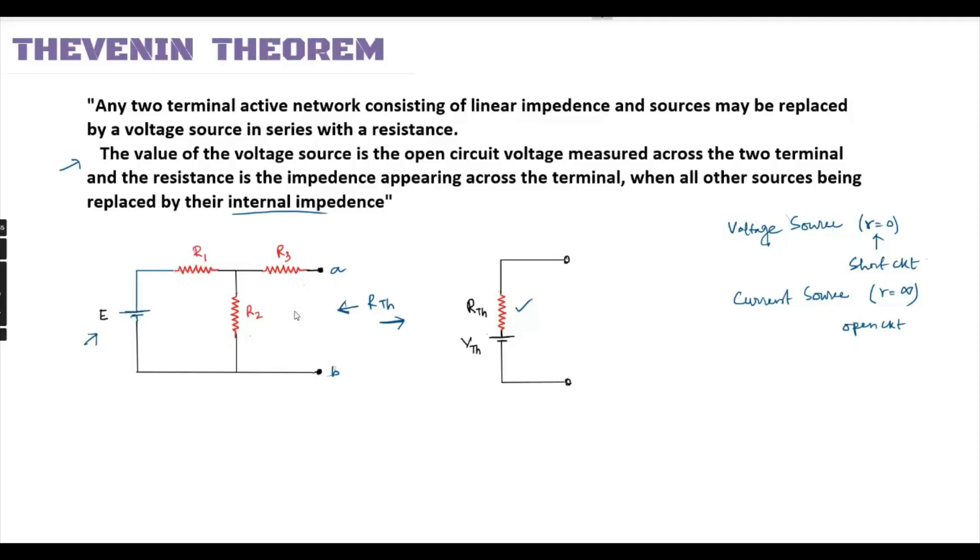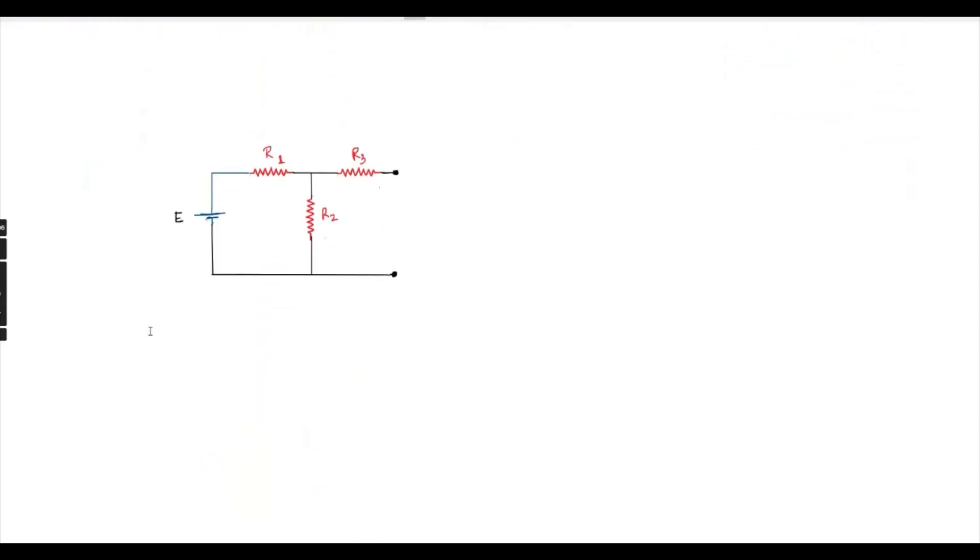The source will be replaced by internal impedance for the resistance. For RTH, the voltage source will have internal resistance R equals to zero. An ideal voltage source acts as a short circuit, so we replace it with a short circuit.